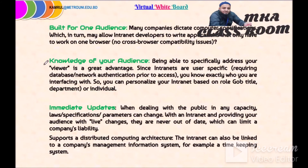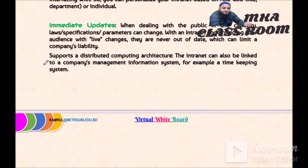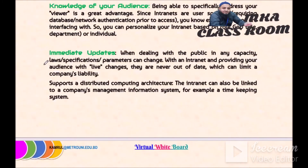Knowledge of your audience: being able to specifically address your viewers is a great advantage. Immediate updates: when dealing with the public, laws, specifications, and parameters can change. With an intranet, providing your audience with live changes means they are never out of date, which can limit a company's liability. The intranet supports distributed computing architectures and can also be linked to a company's management information system, for example a timekeeping system.